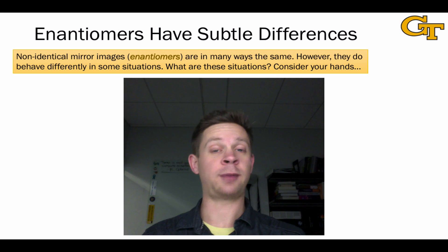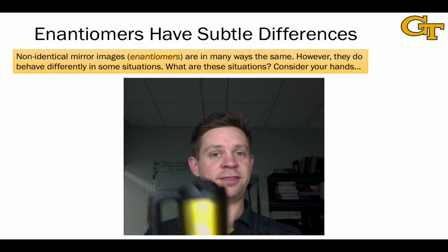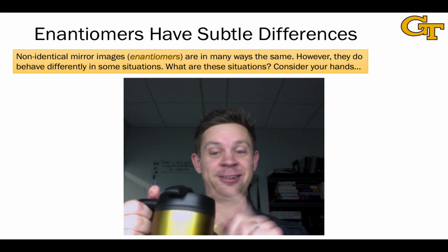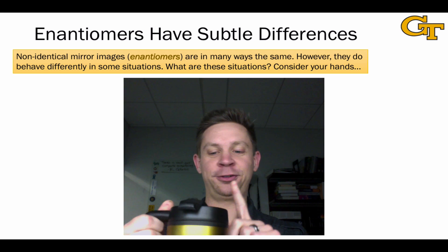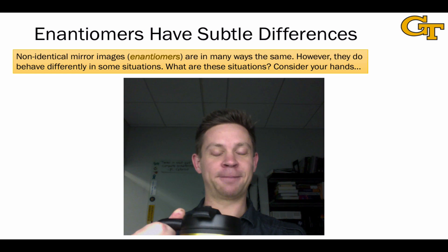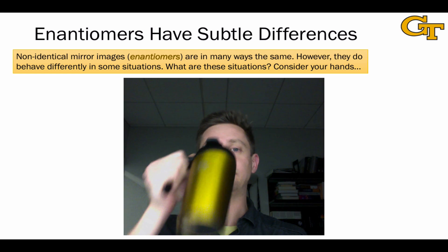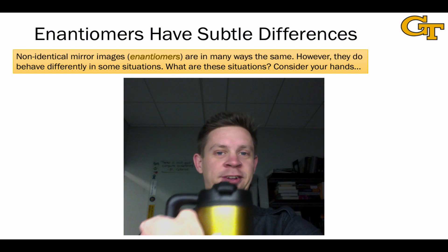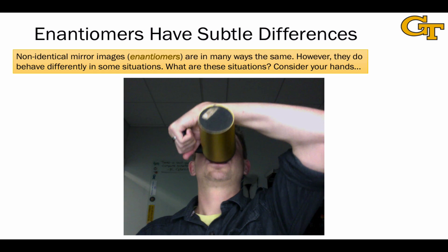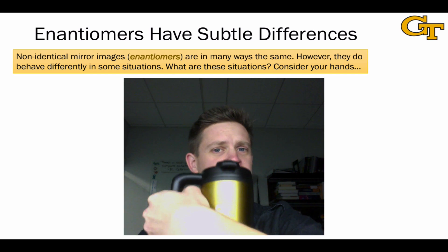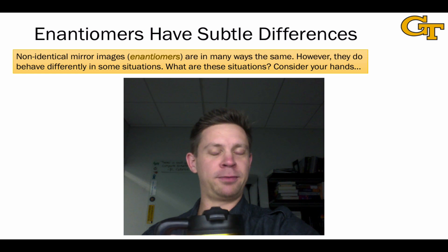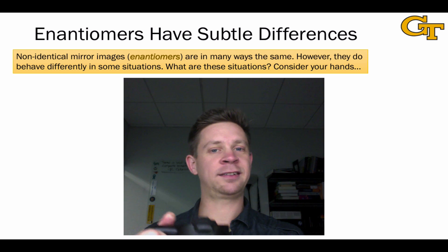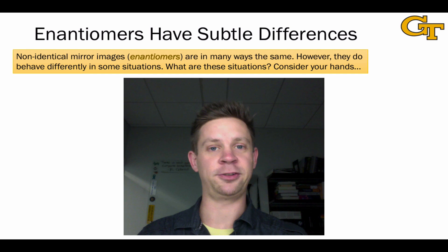The same is not true of an object that has a handedness, like this coffee mug. Whether I hold this coffee mug with my right or left hand matters if my goal is to get liquid into my mouth. If I hold it with my right hand and drink, it looks like this — but if I hold the mug with my left hand, now I have to do a goofy motion like this. There's something fundamentally different about interacting with this mug with my right and left hands, because the mug has a handedness. We'll formalize this and look at it at the molecular level in the remainder of the videos in this series.